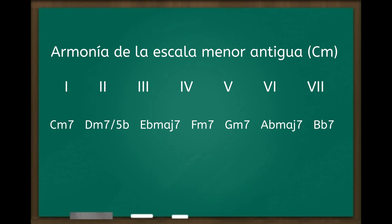Empecemos por la escala menor antigua. En el primer grado voy a tener un acorde menor séptima, segundo grado un acorde de re semi disminuido, en el tercer grado mi bemol séptima mayor que sería el relativo mayor, cuarto grado fa menor séptima, quinto grado sol menor séptima, sexto grado la bemol séptima mayor, y en el séptimo grado si bemol séptima. Recordemos que estamos trabajando en la tonalidad de do menor.